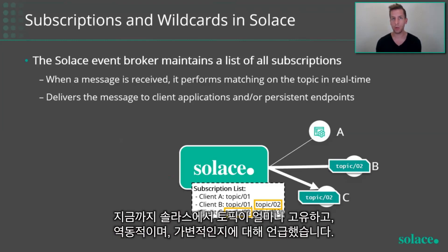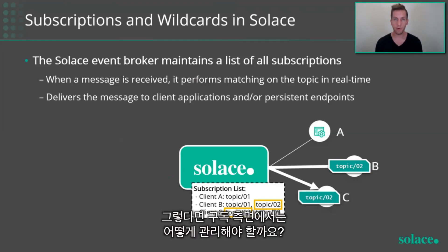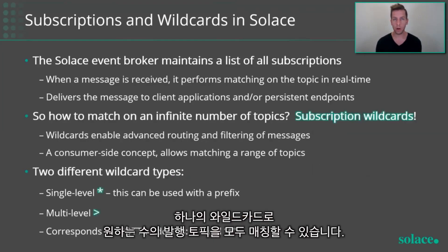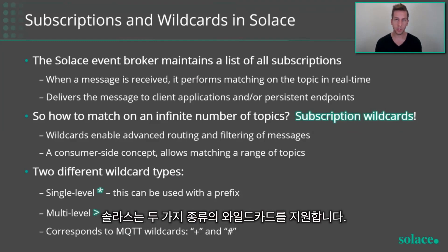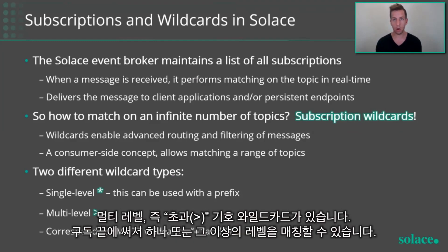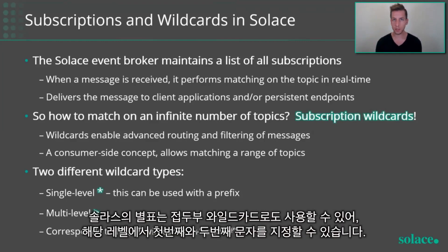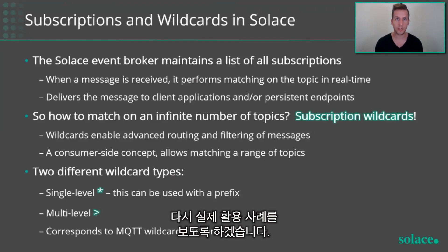So how do we manage variable topics from a subscription perspective? The answer is with wildcards. With a single wildcard, you can match any number of published topics. Solace supports two different wildcards: the multi-level wildcard, the greater-than sign, which can match one or more levels used at the end of a subscription, and the star, the single-level wildcard, which will match anything up to the next level — the next slash. The star in Solace can actually be used as a prefix wildcard, so you can specify the first couple of characters on that level.